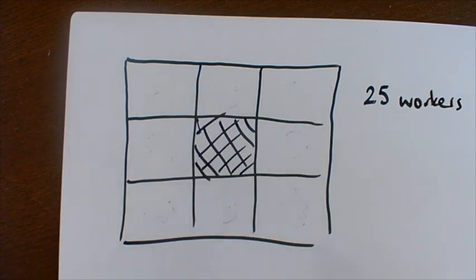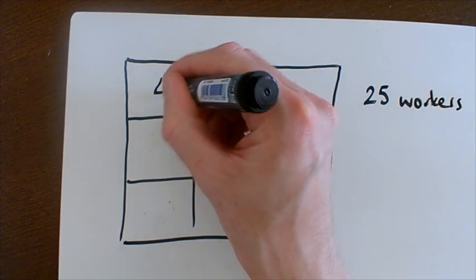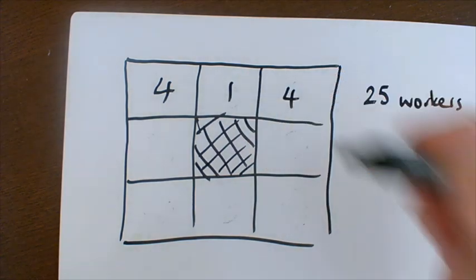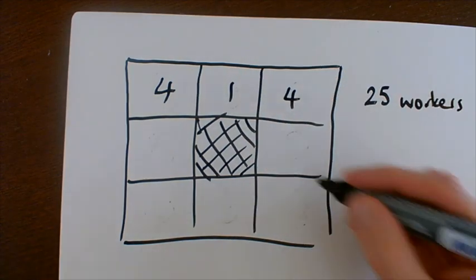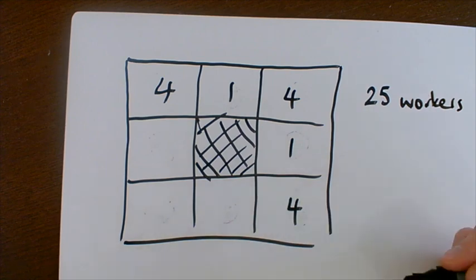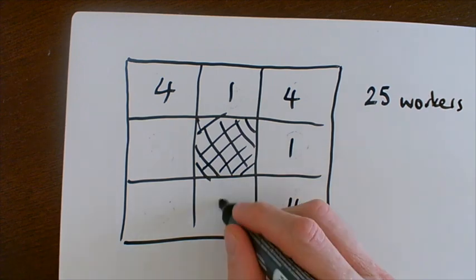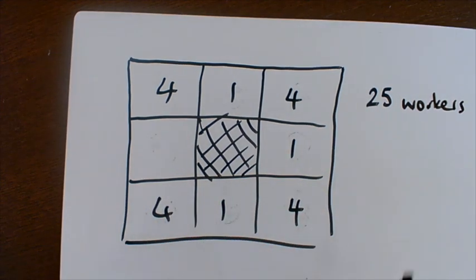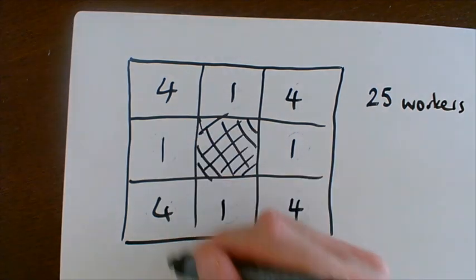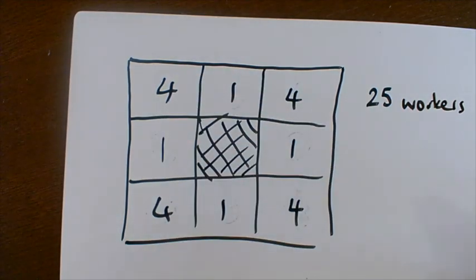So, for example, you could have four and one and four because that makes nine. And you could have one and four down there because that still adds up to nine. And you could have one and four there because the bottom now adds to nine. And you could have four and one and four down there because that also adds up to nine.